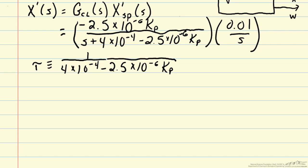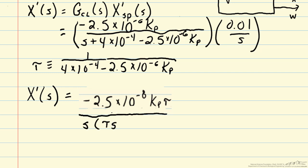Now we can rewrite X prime of S in terms of tau. We can write that as 2.5 times 10 to the minus 8 Kp times tau. So we incorporated the height of our step there. That's our overall gain. And then in the denominator we have S times tau S plus 1.